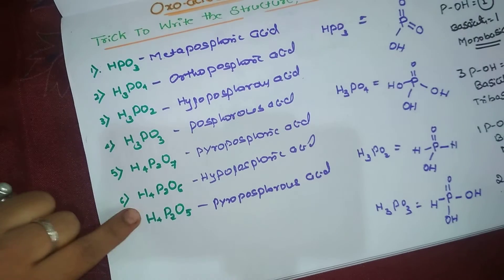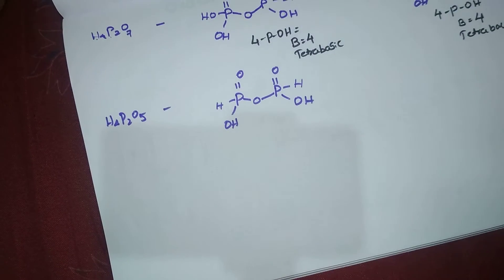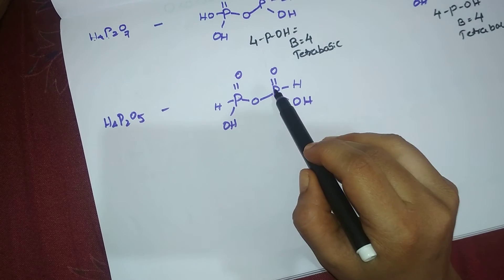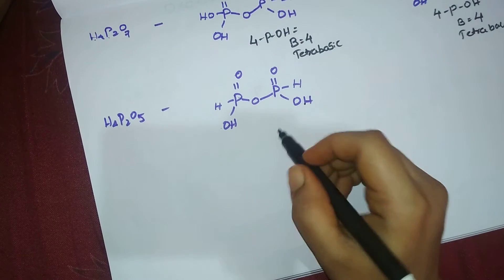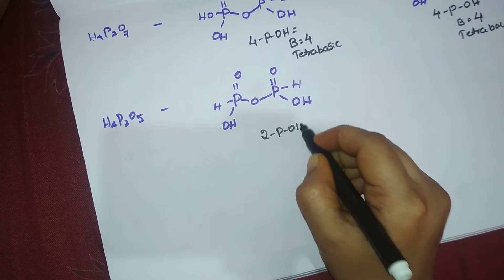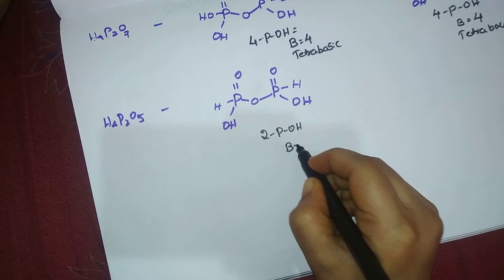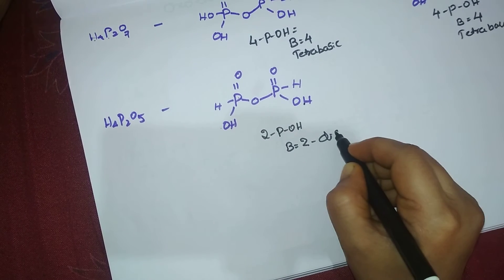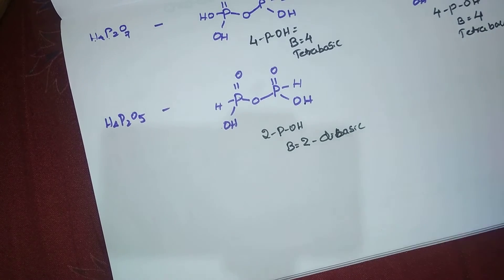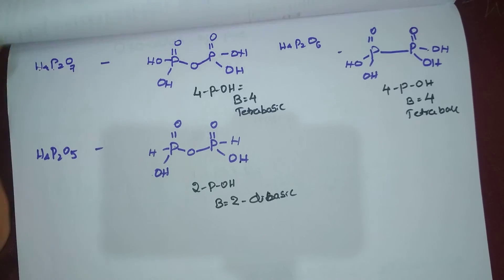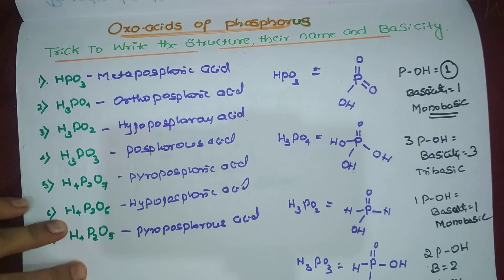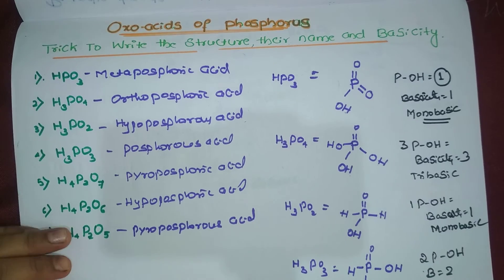The last one is H₄P₂O₅, pyrophosphorous acid. Here we can count one P-OH bond and one more P-OH bond - only two P-OH bonds are present. So the basicity is 2 and it is dibasic in nature. If you know the structure, you can easily find the basicity in your competitive exam.